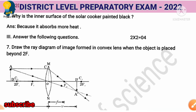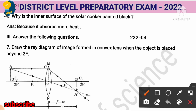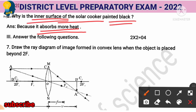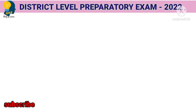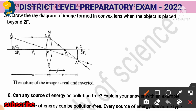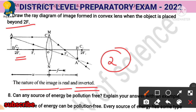Next question: Why is the inner surface of a solar cooker painted black? Very simple — it is because it absorbs more heat. The inner surface is black colored to absorb more heat. Next two-mark question: draw the ray diagram of the image formed in a convex lens when the object is placed beyond 2F. The nature of the image formed is real and inverted.